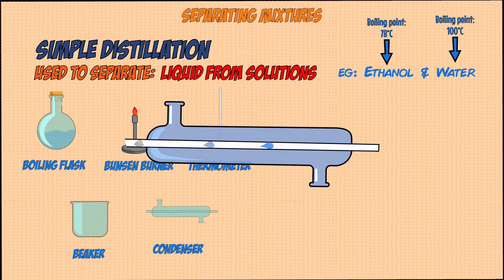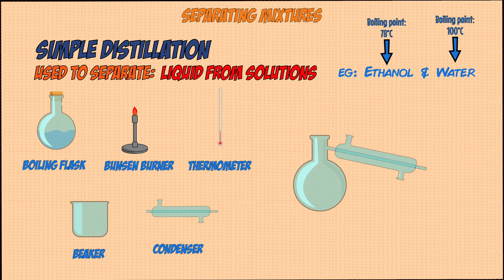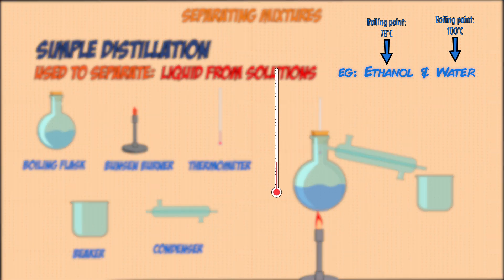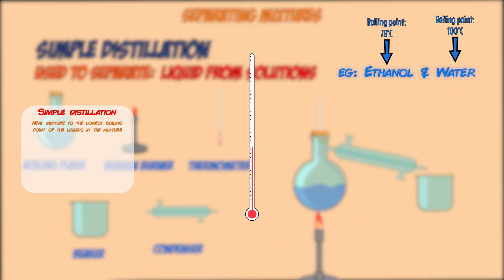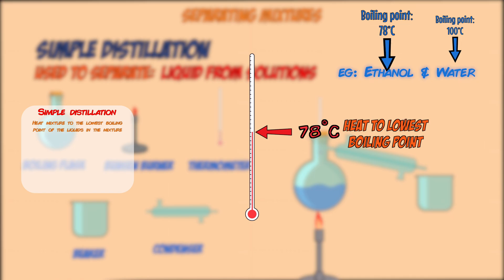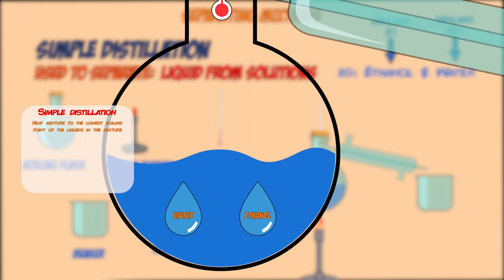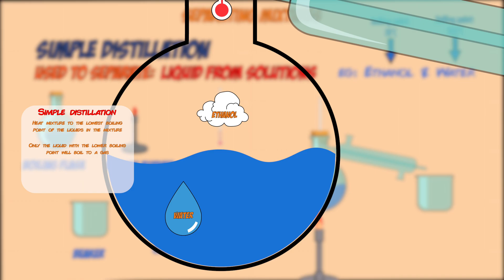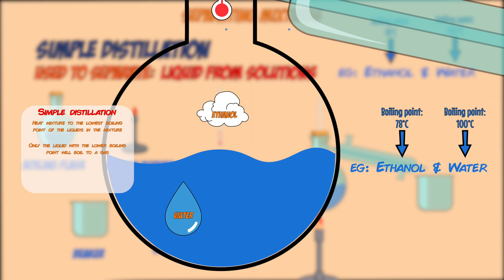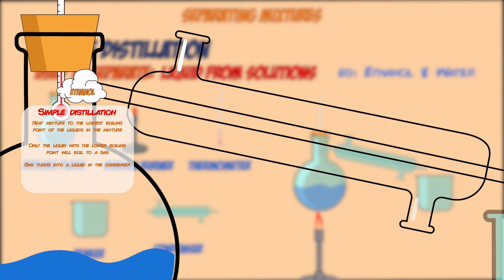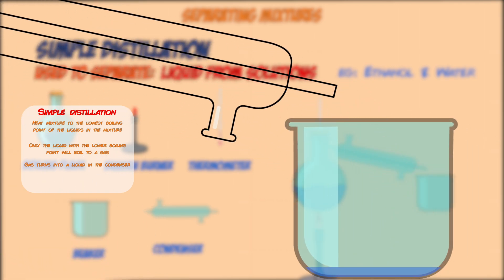A condenser is basically a tube with a jacket around it which has cold water flowing through it — it cools down and condenses gases that flow through it. You connect all these together, add the mixture to the boiling flask, and heat it. Using the thermometer, you heat the solution only to the lowest boiling point — 78°C in this example. The ethanol boils and turns into gas while the water remains liquid in the flask. The ethanol gas passes through the condenser, turns into liquid, and is collected in the beaker.